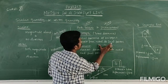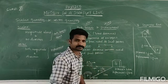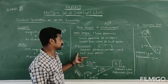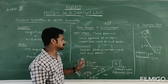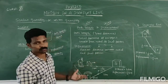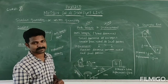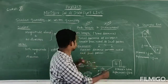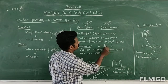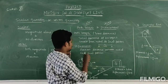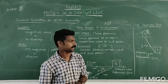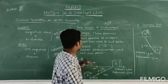Displacement means the shortest distance between the initial and final position, or the shortest distance between two points. For example, if A to B is one kilometer in a straight line, then path length is 1 km and displacement is also 1 km, because it is a straight line.